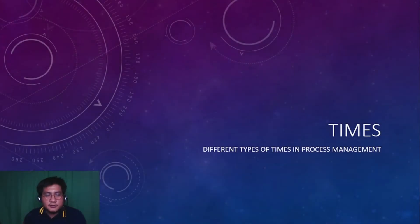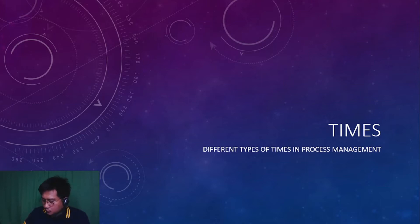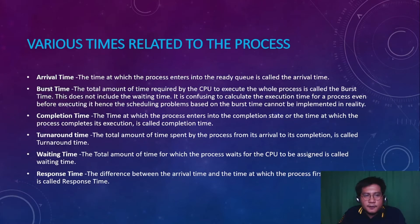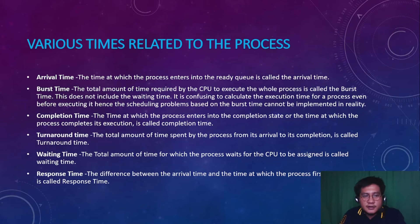Hello everyone, my name is Recited Orchestra and welcome to Pantas Malaya. For today's topic we are going to talk about the different types of times in process management. As we all know, process management is one of the major components of the operating system, and it has different types of times. The various times related to the process are: arrival time, burst time, completion time, turnaround time, waiting time, and response time.